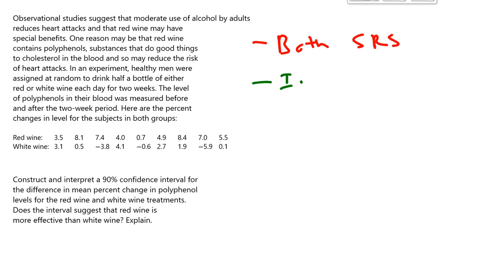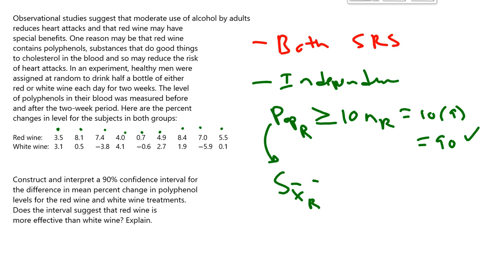The next thing you need to check is something called independence. For independence, we're supposed to say that the population of all men who drink red wine is greater or equal to 10 times the sample size of men in this group that drink red wine. If we count up the data points, we have 1, 2, 3, 4, 5, 6, 7, 8, 9. So 10 times 9, or 90. I'm going to say that's probably true.